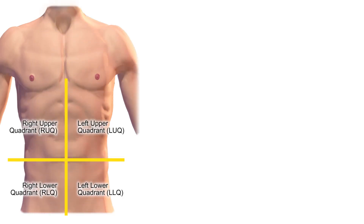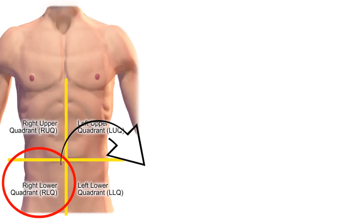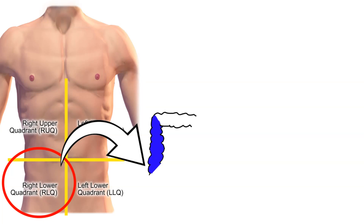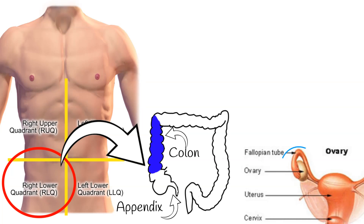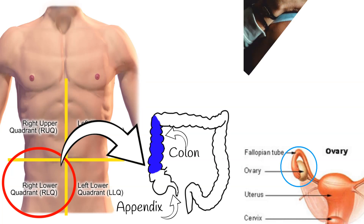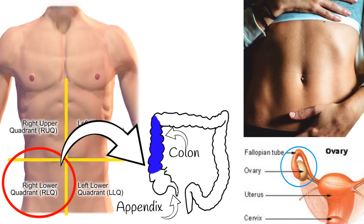We can divide the abdomen into four imaginary quadrants. The following organs are located in the right lower quadrant: the appendix, the upper portion of the colon, and the right ovary and fallopian tube in women.